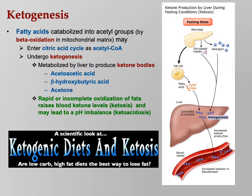Ketosis can lead to a pH imbalance called ketoacidosis — ketones will lower pH. One thing diabetics face is diabetic ketoacidosis. Diabetics don't produce insulin or aren't responsive to it, so they can't metabolize carbs for energy. They have to do a lot of fat metabolism to get energy, and when they do that they may raise their ketone levels, causing a serious acid-base imbalance called ketoacidosis — diabetic ketoacidosis, or DKA.